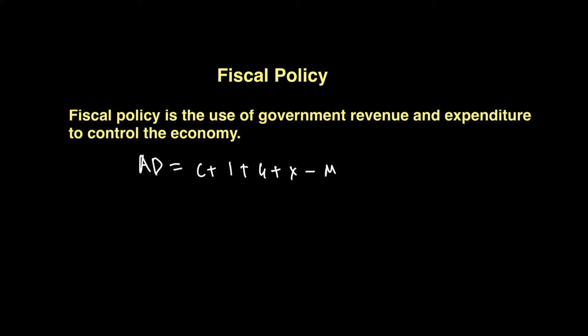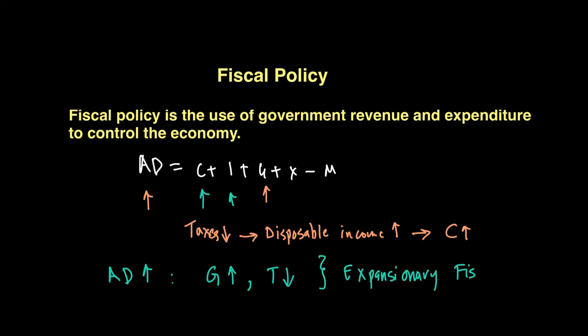Whenever government expenditure goes up, we know this AD curve will go up. At the same time, if the government reduces taxes in an economy, then disposable income goes up and that can in turn result in consumption going up. Furthermore, if the government is reducing taxes on firms, it can also make firms invest more, so I can go up. So the government can increase aggregate demand by increasing G or reducing T in an economy. And this is called expansionary fiscal policy.